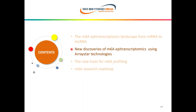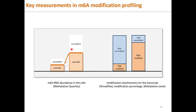Now we have come to appreciate the exciting epitransitomics in biology and disease. ArrayStar M6A profiling technologies are powerful tools in epitransitomics studies. Here we would like to share some latest M6A epitranscriptomic discoveries using ArrayStar technologies. In M6A epitranscriptomic profiling, there are two key measurements: M6A RNA abundance and M6A modification stoichiometry.